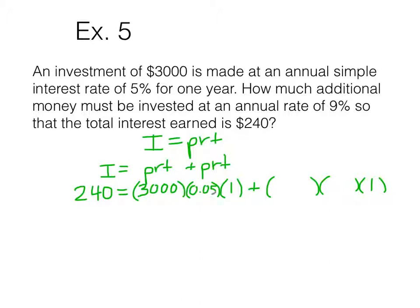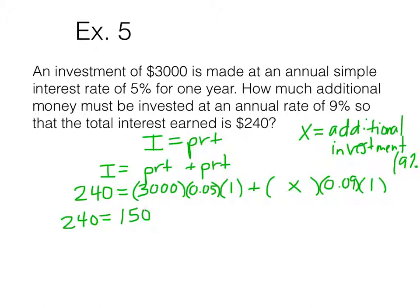We know the initial investment for this part is $3,000, and we know it's at a rate of 5%. Remember to change that to a decimal. Don't use 5. Use 0.05. How much additional money must be invested? So that's my variable here. Additional investment. And that's the 9% investment. So that's going to go here. And I'm going to put my 9% as a decimal in right there. And now this is the equation we're solving.